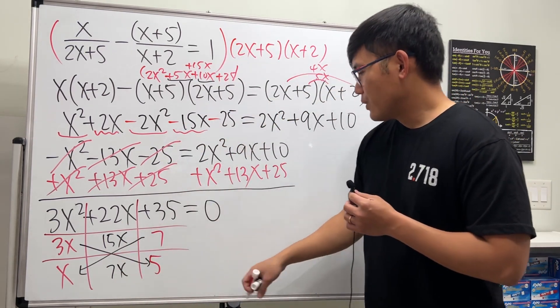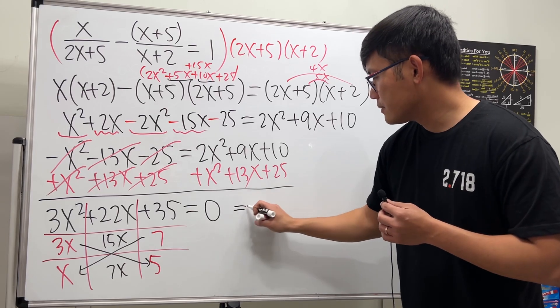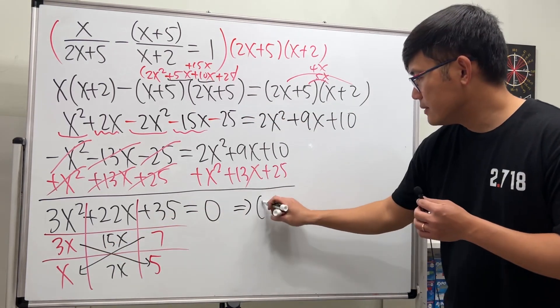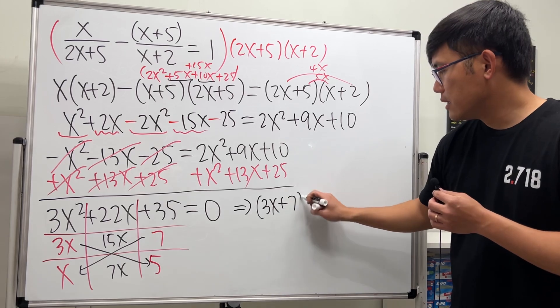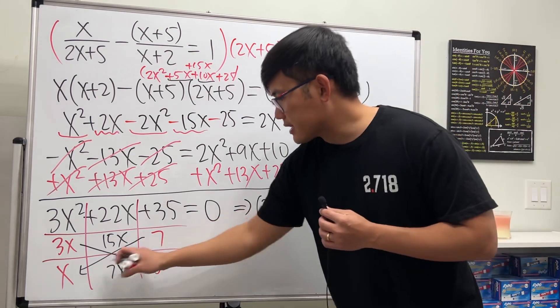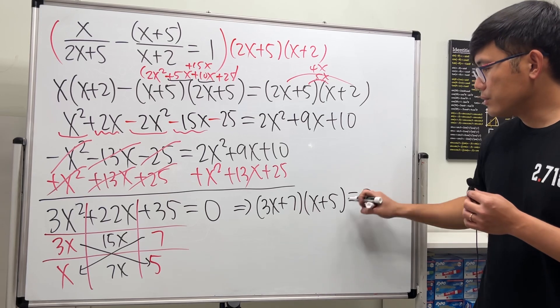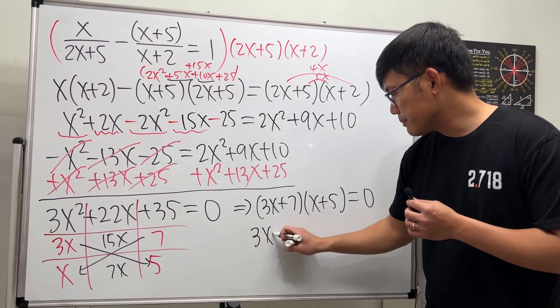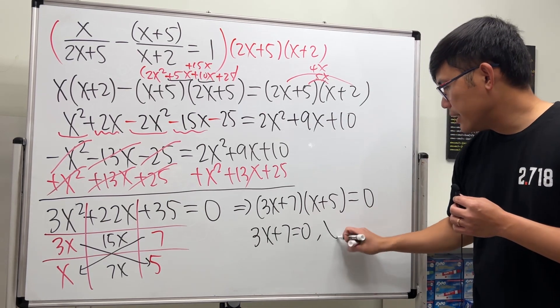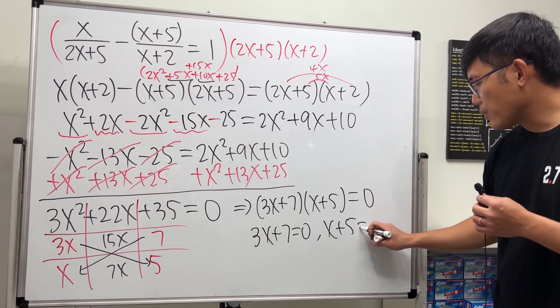With that said, we know 3x plus 7 times x plus 5 equal to 0. And this right here is 3x plus 7 equals 0, and then x plus 5 equals 0.